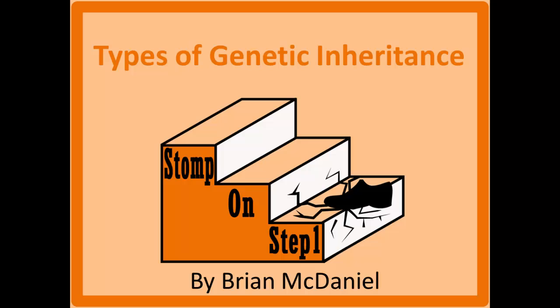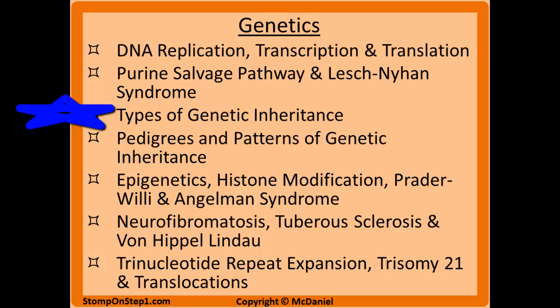Distinguished Future Physicians, welcome to Stomp On Step 1, the only free video series that helps you study more efficiently by focusing on the highest yield material. In this video we're going to be covering different types of genetic inheritance — things like autosomal dominant, autosomal recessive, X-linked recessive, mitochondrial, as well as a handful of other genetic concepts and terms.